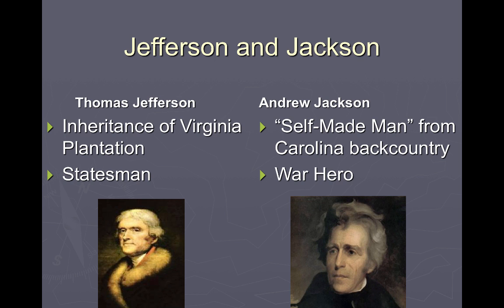Thomas Jefferson inherited his wealth — his plantation in Virginia and the slaves that came with it. Both men are slave owners. Jefferson comes from inherited wealth but proved himself as a statesman: involved in the Continental Congress, the primary author of the Declaration of Independence, ambassador to France, vice president, eventually president, and importantly secretary of state to George Washington in his first cabinet.